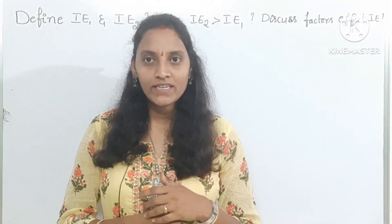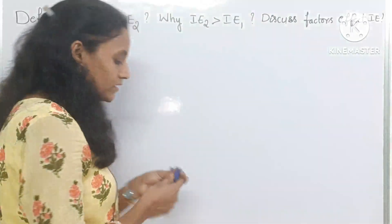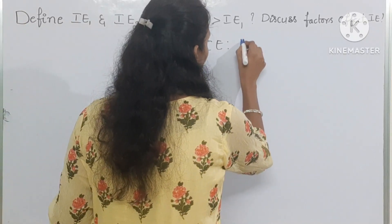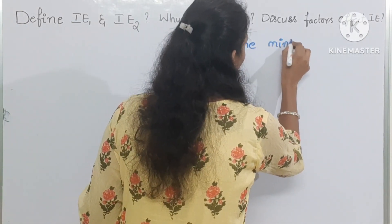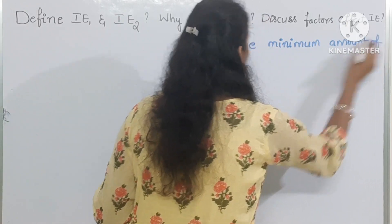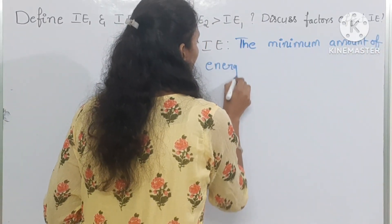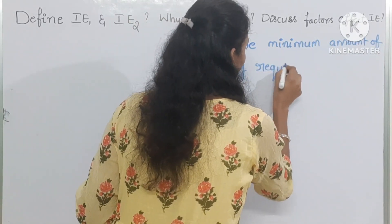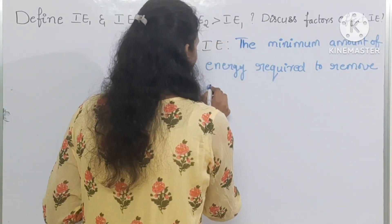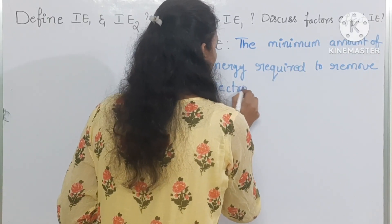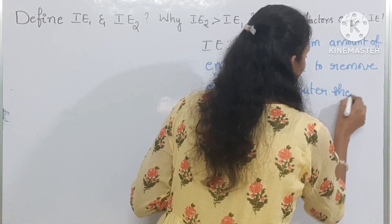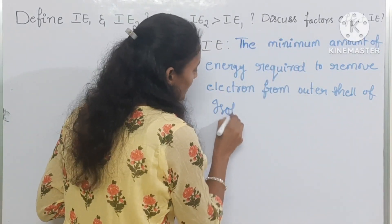Ionization enthalpy is defined as the minimum amount of energy required to remove an electron from the outer shell of an isolated gaseous atom.